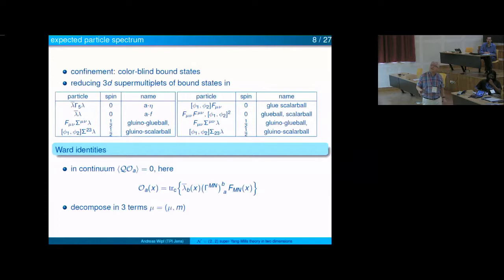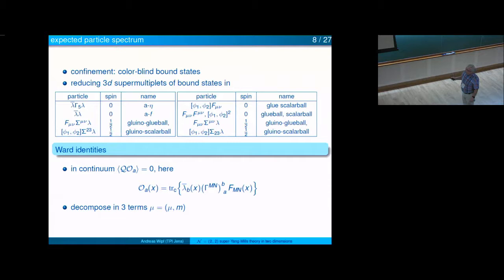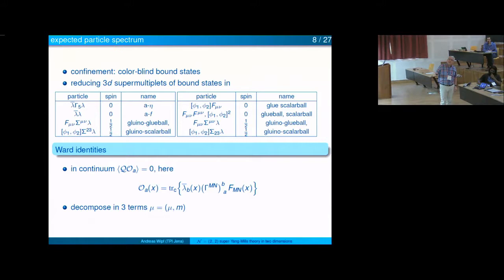Now I flash the expected spectrum of this two-dimensional theory. We think we know the spectrum in four dimensions — at least the low-lying states are two multiplets, both chiral multiplets. Reducing these two multiplets gives multiplets whose interpolating operators are written here: an adjoint eta and adjoint f particle, gluino-glueball, gluino-scalar-ball — this should probably be one multiplet — and the second multiplet would be the glue ball and so on. I should say much more about this; we'll see later that the masses of this second multiplet seem to decouple.